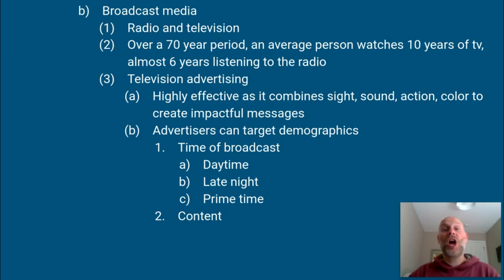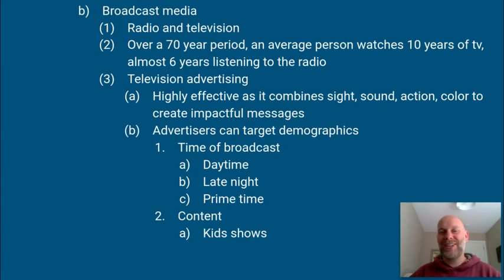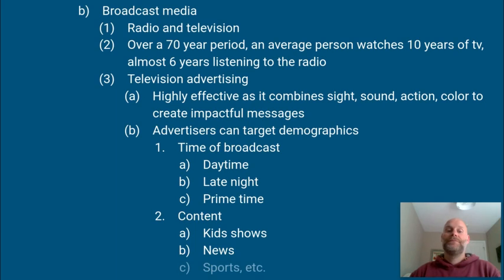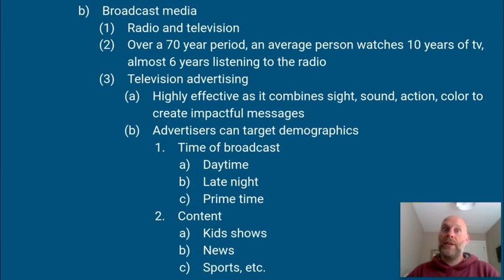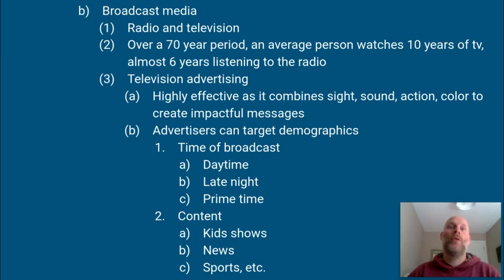Advertisers can also target demographics based on content. For example, you can advertise during a children's show — like Saturday morning cartoons — to target kids. News shows typically attract adults, so you can target adults that way. If there's a football game on you see beer commercials all the time. If you're watching shows about cars and fixing cars, you'll inevitably see commercials for auto parts stores and motor oils. Advertisers target their audience based on the content of the show being broadcast.